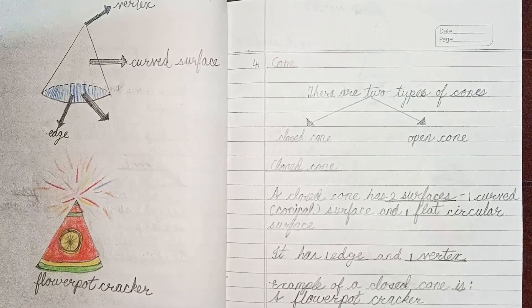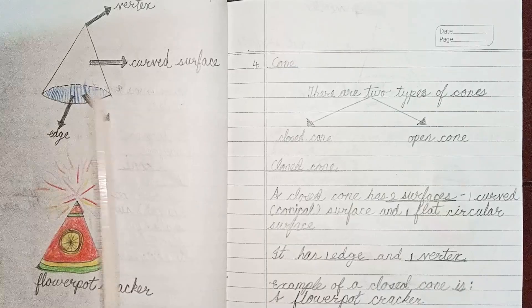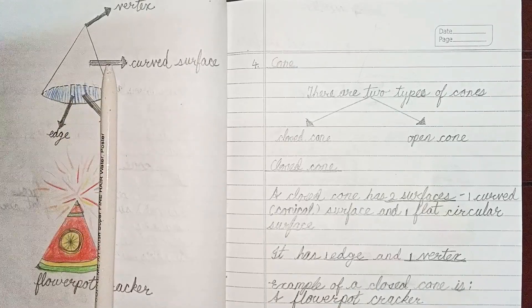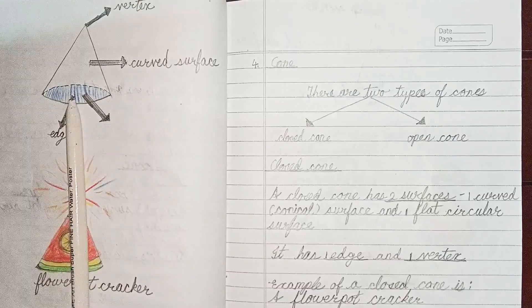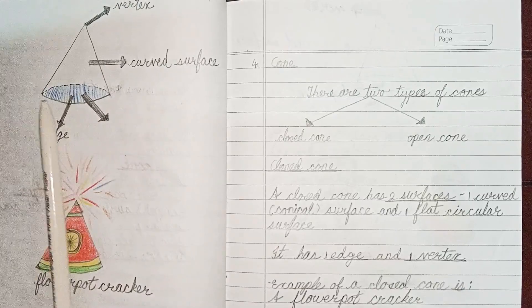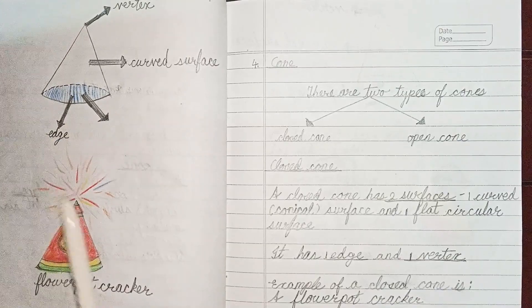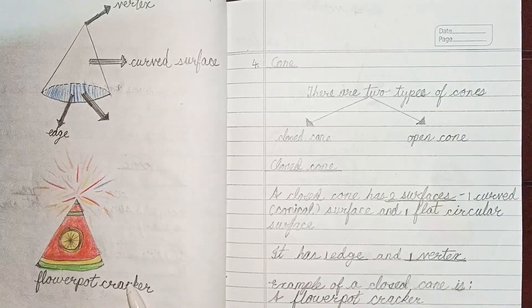Closed cone has two surfaces - one curved conical surface and one flat circular surface. It has one edge and one vertex. Example of a closed cone is a flowerpot cracker.